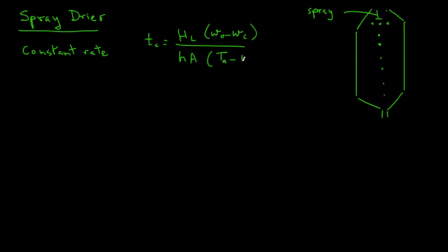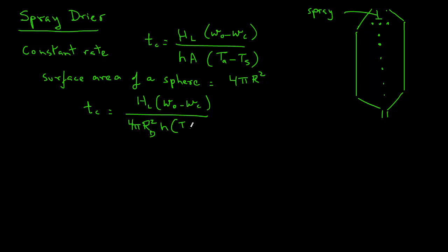Now, in this case, we are looking at a spherical droplet. So, the surface area of a sphere is 4 pi R square, so we can write TC equals HL times W0 minus WC divided by 4 pi RD square, this is for the droplet initially, times H times TA minus TS. So, RD is the radius of the droplet, soon after the droplet is formed in the nozzle of the sprayer.